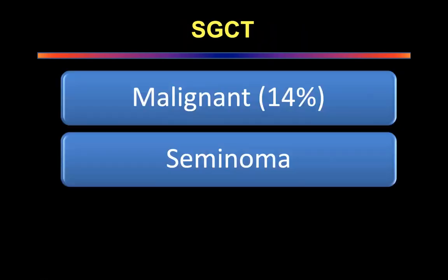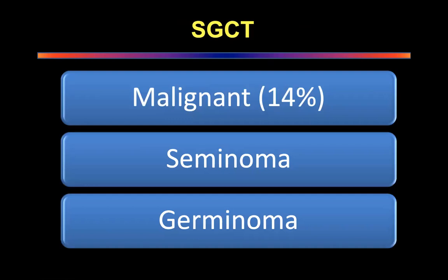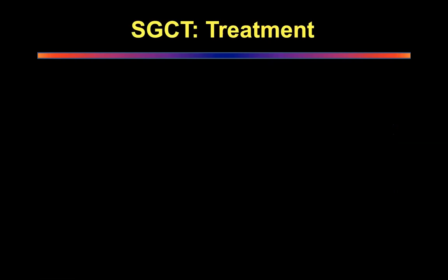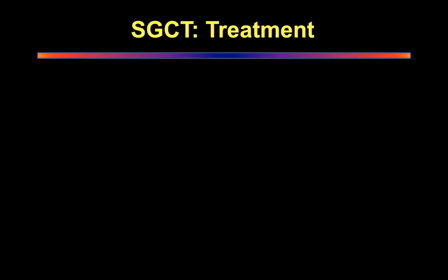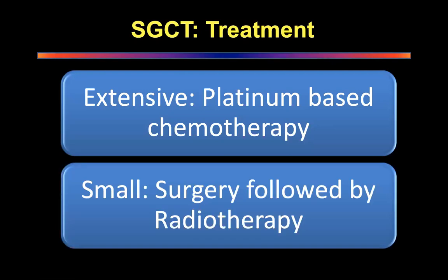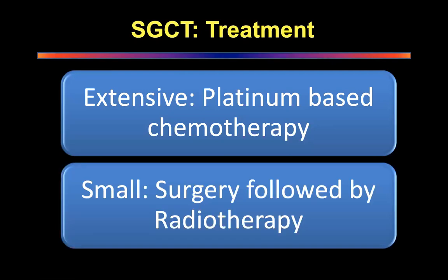There are two types of seminomas: seminomas and germinomas. Treatment: platinum-based chemotherapy. For small lesions, surgery followed by radiotherapy.